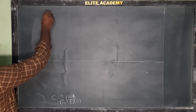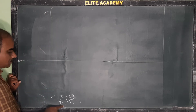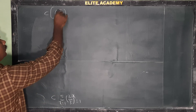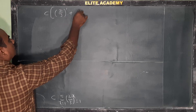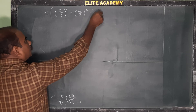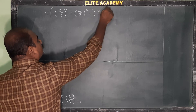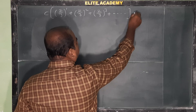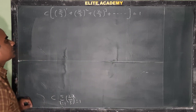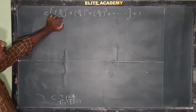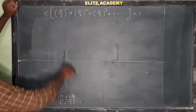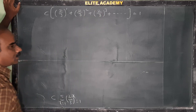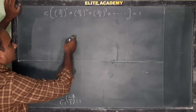Substituting x = 1, 2, 3 and so on, this gives c · [(2/3)^1 + (2/3)^2 + (2/3)^3 + ...] = 1. The terms inside the bracket form an infinite geometric series with base 2/3.